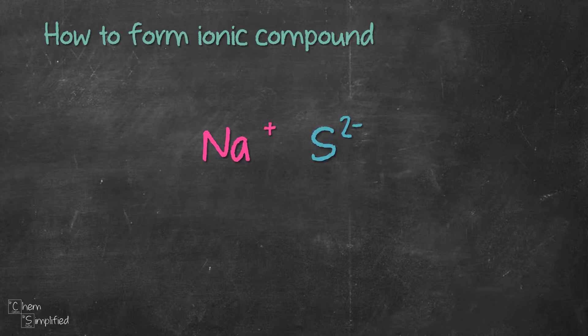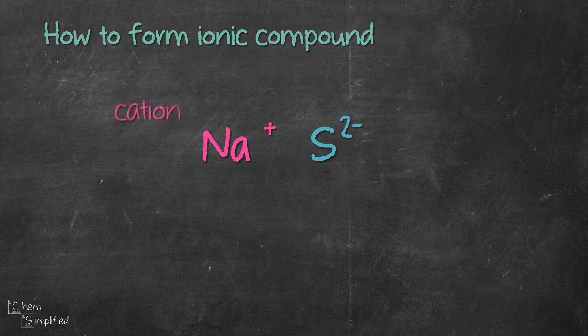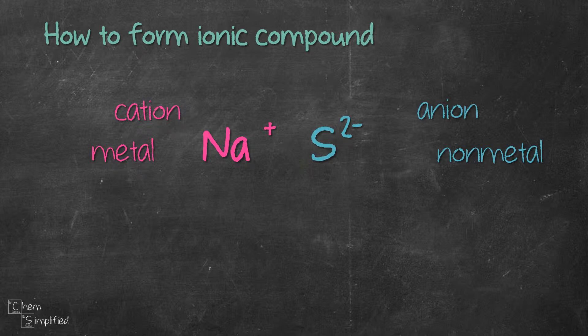Before we get started, let's briefly go through how ionic compounds are formed from cations and anions using the crossover method. One tip to remember is that we always write the metal first followed by the nonmetal. In other words, the cation will always be on the left and the anion will always be on the right. This is very important to keep in mind.